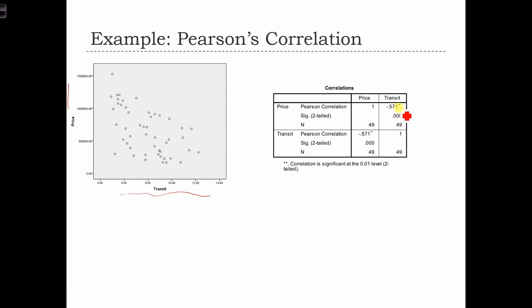Here we see that the correlation statistic is minus 0.571. So that's telling us A, that the relationship is negative, and B, compared to the 0.841, the strength of this relationship isn't as strong.